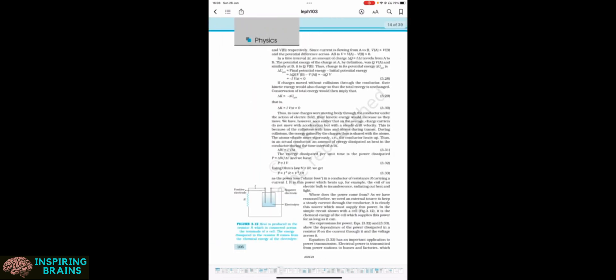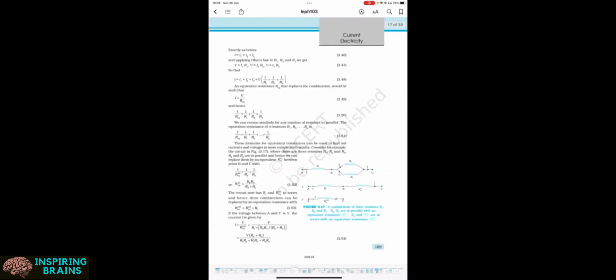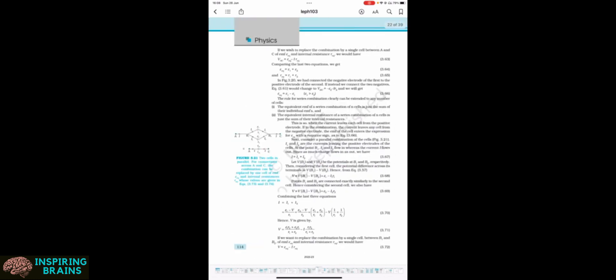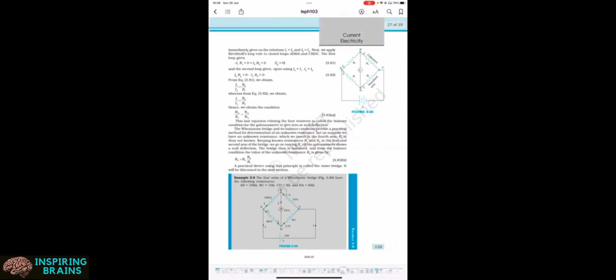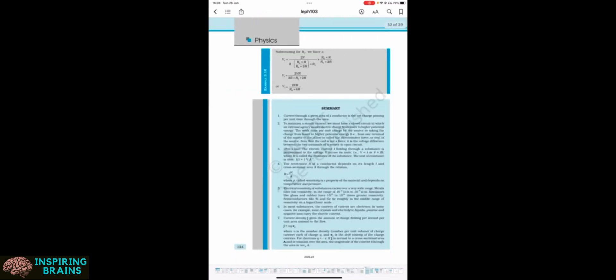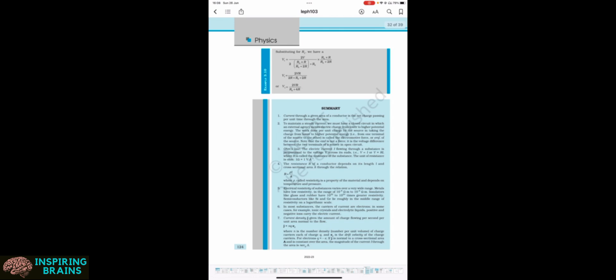So energy, power, electrical energy, power, then combination of resistors like series and parallel, then cells, EMF internal resistance. So again, cells in series and parallel, Kirchhoff's rules, Kirchhoff's law, first and second law, then Wheatstone bridge, meter bridge, and potentiometer. So now I understand that what are the topics that will be covered in this current electricity and what are the sums that should be present in these topics.